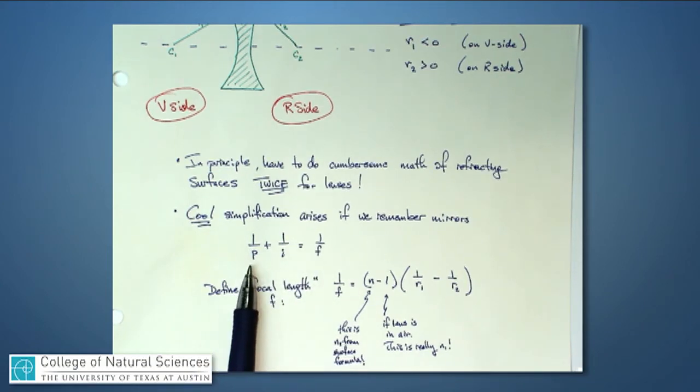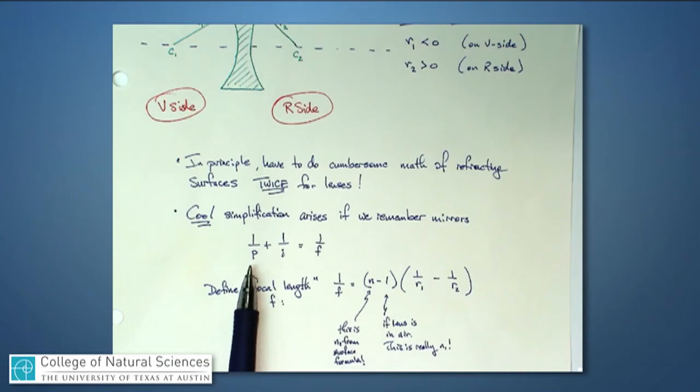This is an equation that relates the location of the object relative to the mirror, so the so-called object distance. The image distance, in other words, where is the image located relative to the lens. And the focal length. And as with mirrors, we will have something called the focal length for a lens.